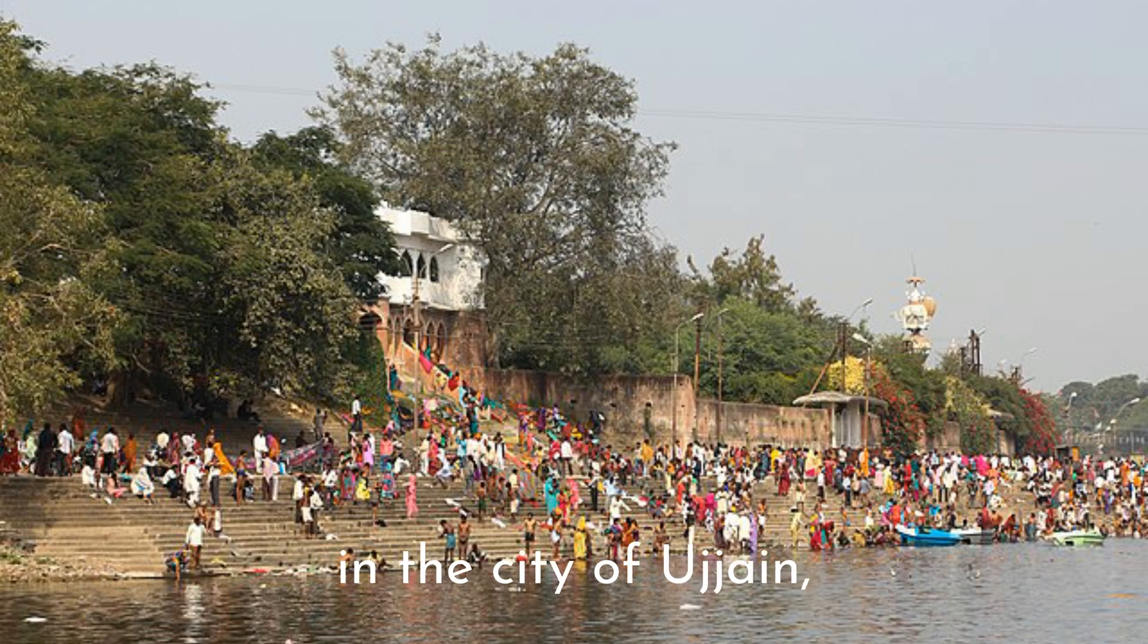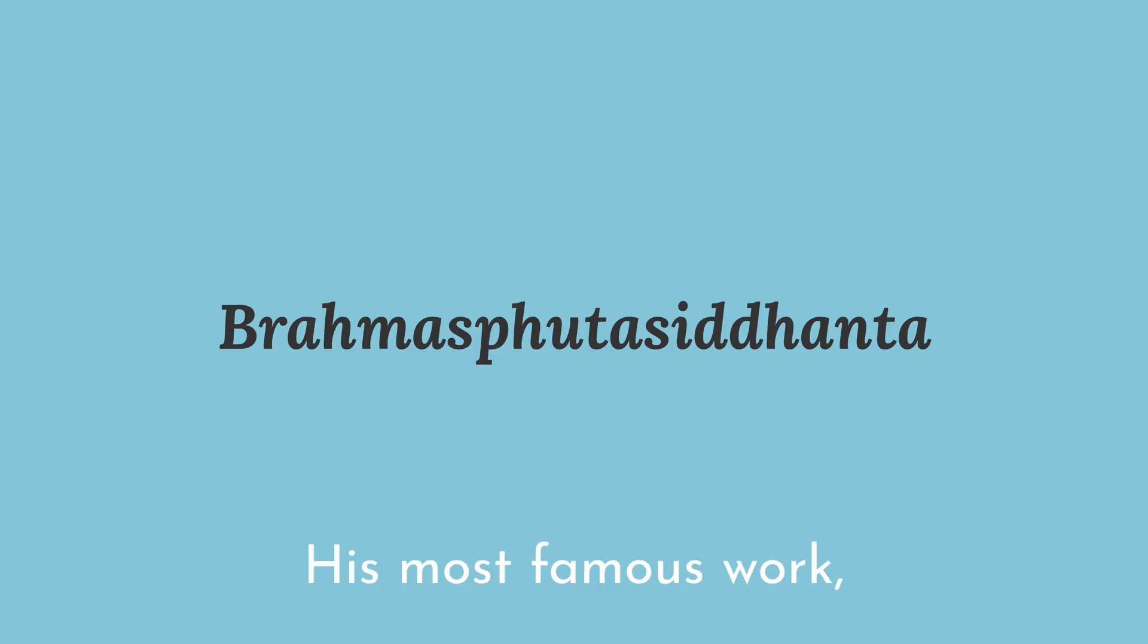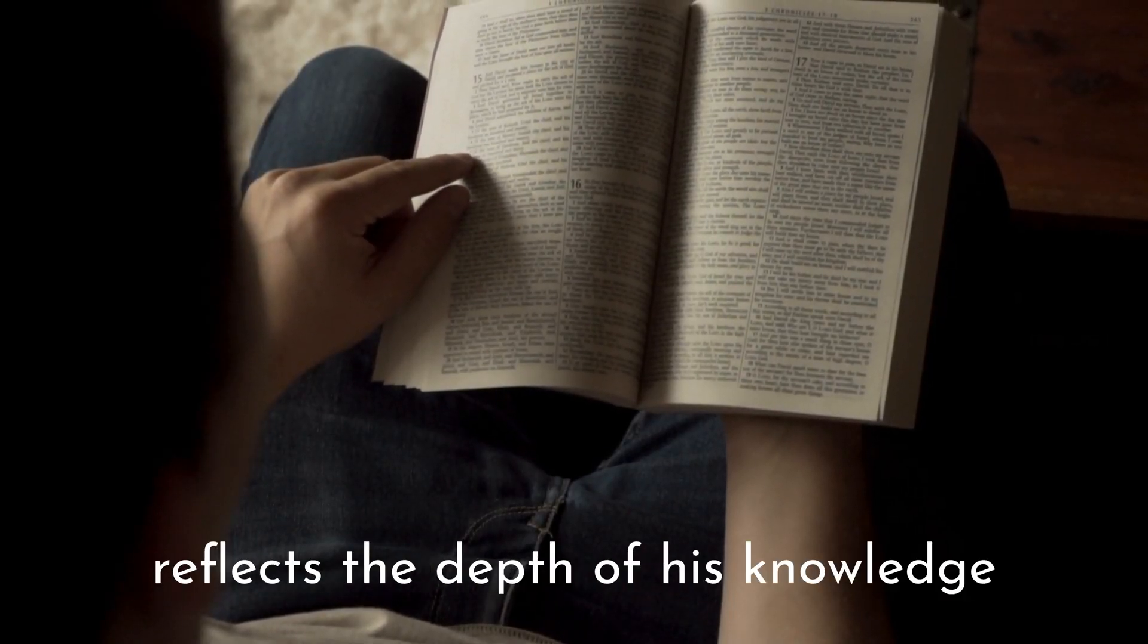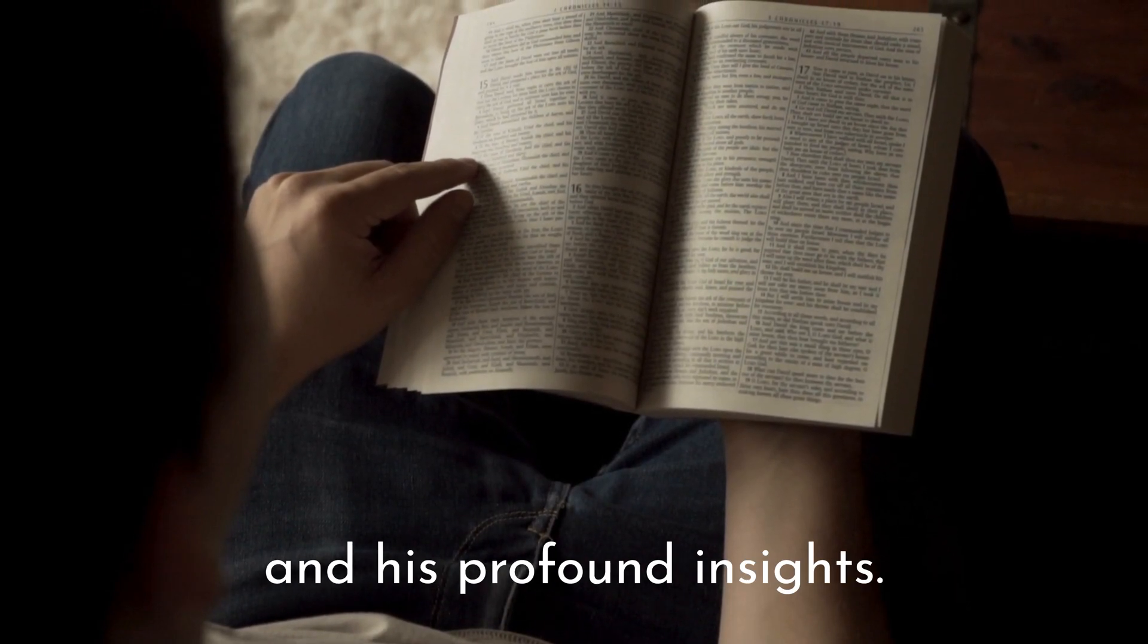Brahmagupta was born in the city of Ujjain, which was a thriving center of learning and culture in ancient India. His most famous work, the Brahmasphutasiddhanta, a treatise on mathematics and astronomy, reflects the depth of his knowledge and his profound insights.